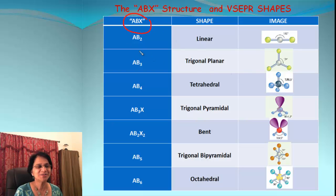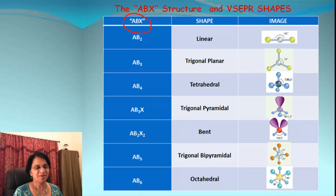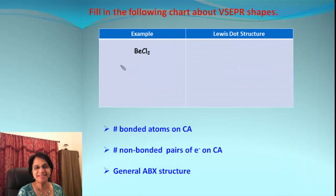Here is a table which will help us predict shapes of molecules if we know the ABX formula. AB2 will be linear, AB3 will be trigonal planar, and so on. Let's take some examples — starting with the molecule BeCl₂.